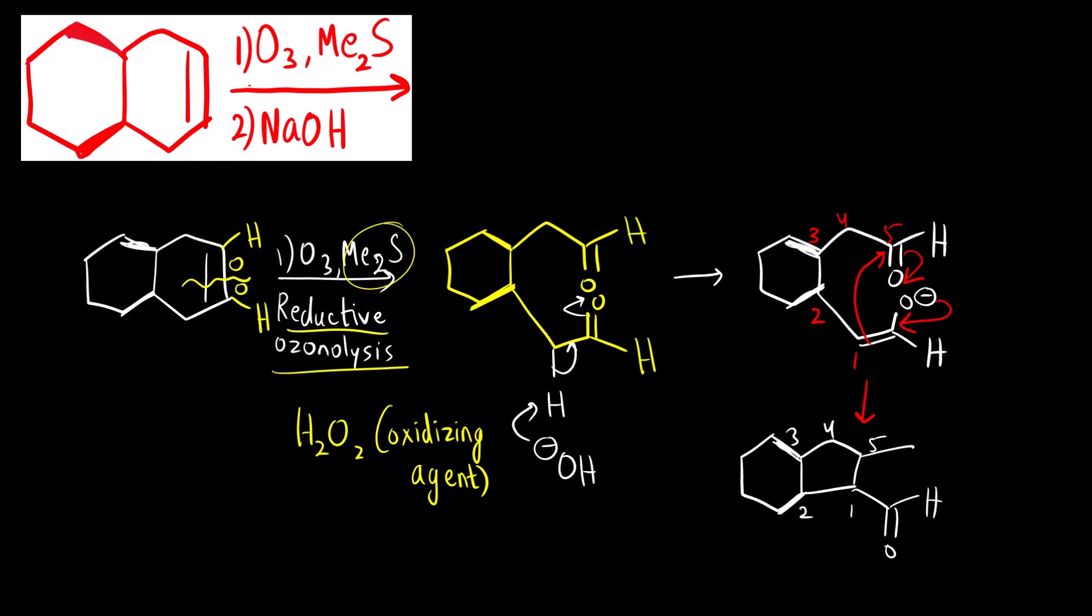Then second, third, fourth, there is nothing. Fifth position, it is O minus will become OH. Now what will happen? This is the aldol reaction product. This is the final product.